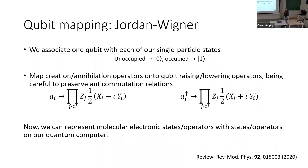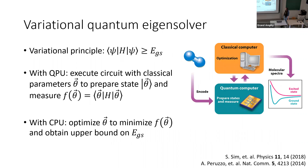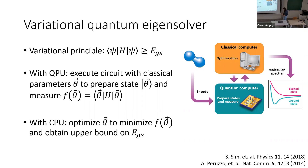The Z strings make it expensive to compute these operators on real quantum computers in terms of CNOTs required, because these are highly entangling operators — but it does work. With this mapping, we have a way of representing molecular electronic states and operators on a quantum computer. One common question is what are the spectra of these molecules, and the variational quantum eigensolver (VQE) has been developed for this. Based on the variational principle, we minimize the expectation value of the Hamiltonian to form an upper bound on the ground state energy, and if we get close enough, we can prepare essentially the ground state itself.